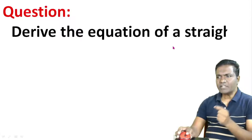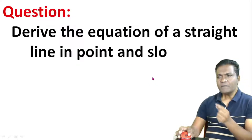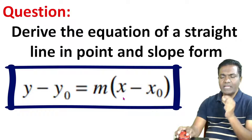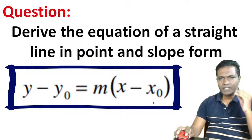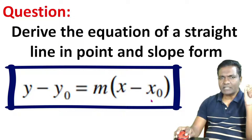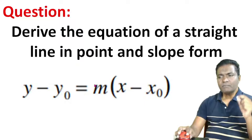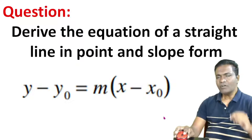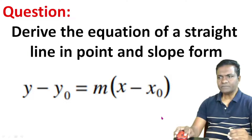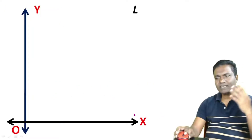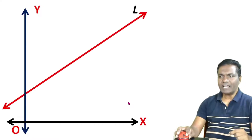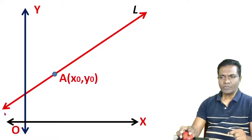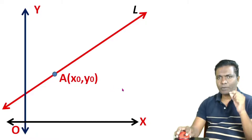Now, derive the equation of a straight line in point and slope form. Consider a line L passing through a point A(x₀, y₀) — this point is given — and the slope is m.